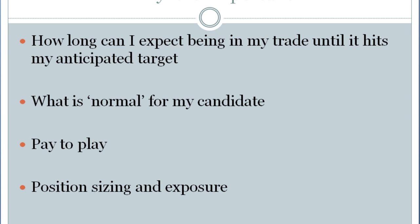And if I set a $5 protective stop loss on a stock that moves $10 in a day, that might be too tight. But if I set a $5 protective stop loss on a stock that only moves $0.50, well, that might be too much. And so average true range helps me to determine what is normal for my candidate, and if I can afford the risk management to purchase and to play in this deep end of the pool.